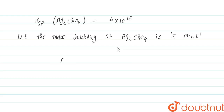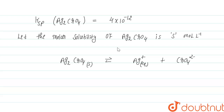Ag₂CrO₄ is a sparingly soluble salt. The solid dissociates as: Ag₂CrO₄(s) → 2Ag⁺(aq) + CrO₄²⁻(aq). This equation is now balanced with two moles of Ag⁺.